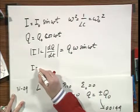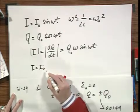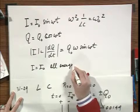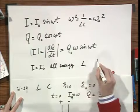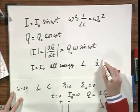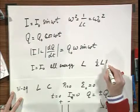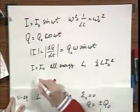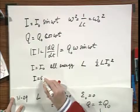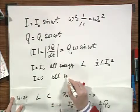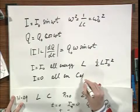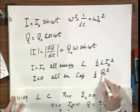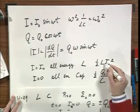Now when I equals I zero, all energy is in the L, in magnetic energy, one half L I zero squared. When I is zero, all energy is in the capacitor in the form of one half Q zero squared divided by C, and there is no magnetic energy.